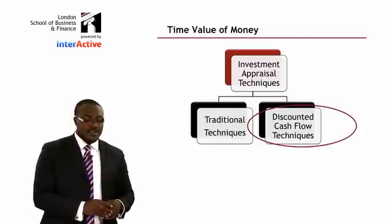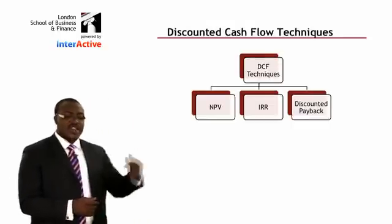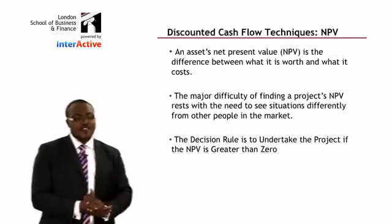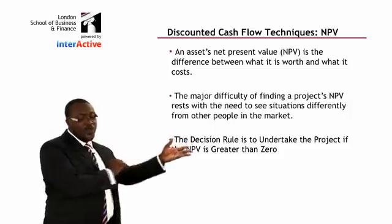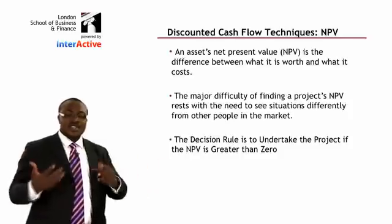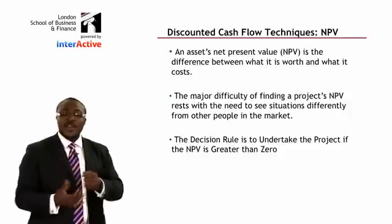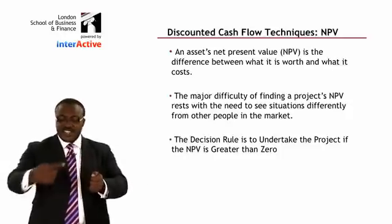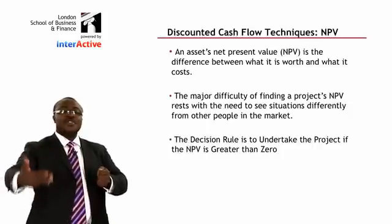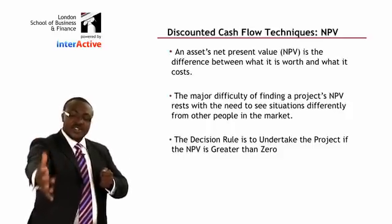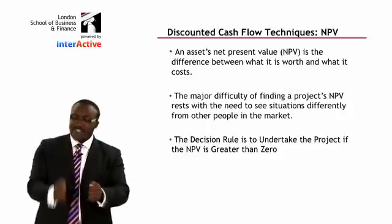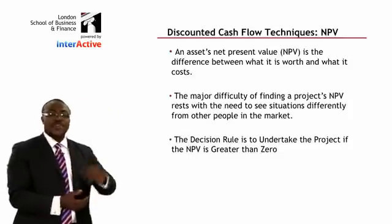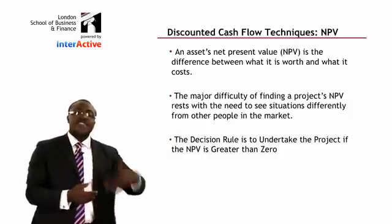Now we look at the discounted cash flow techniques. We examine three key ones: the NPV, the internal rate of return, and the discounted payback. An asset's net present value is the difference between what it's worth and what it costs. The cash outflow happens in year zero before the investment begins, and the series of cash inflows happen over 5, 10, or 15 years. We discount those cash flows back to year zero using the time value of money. The decision rule: if NPV is greater than zero, proceed with the project, because investors have value added for them.